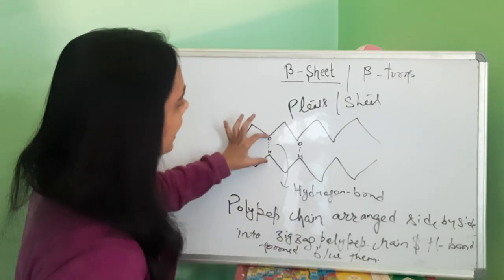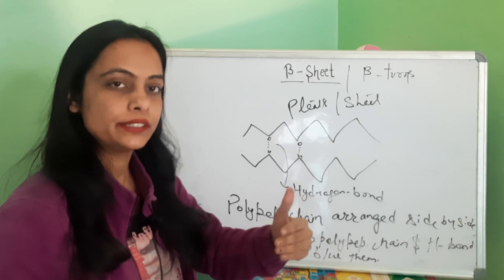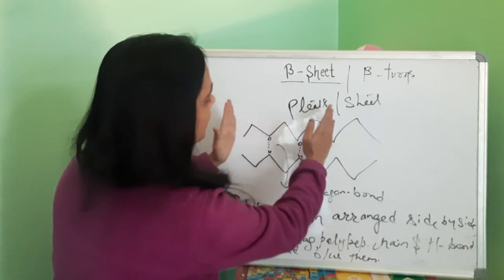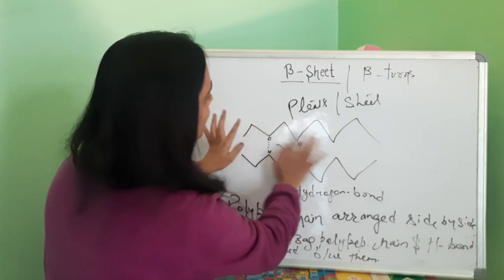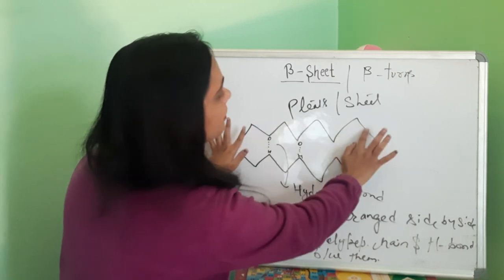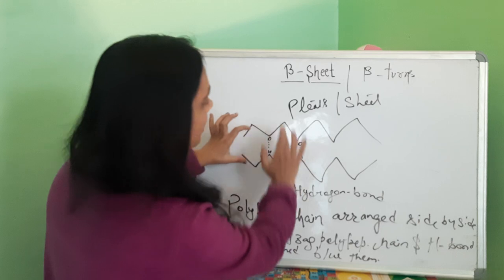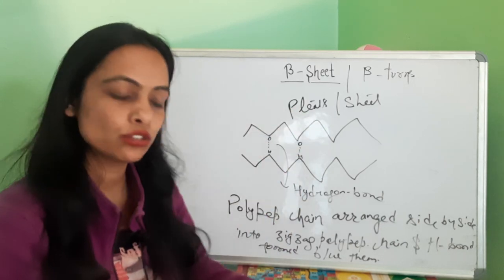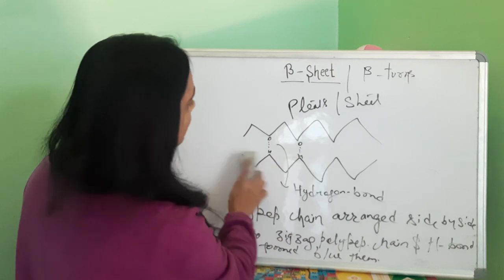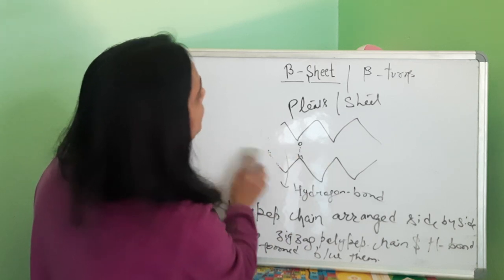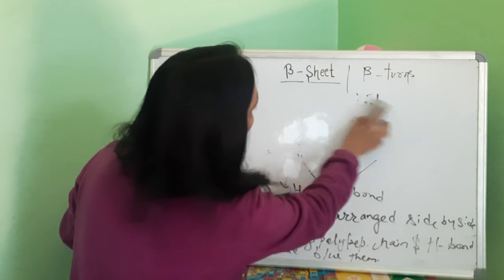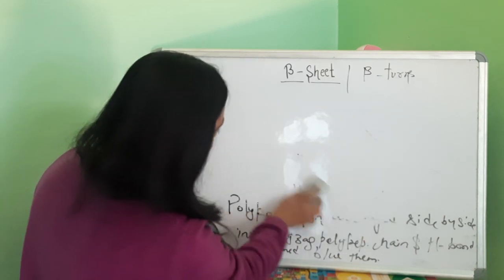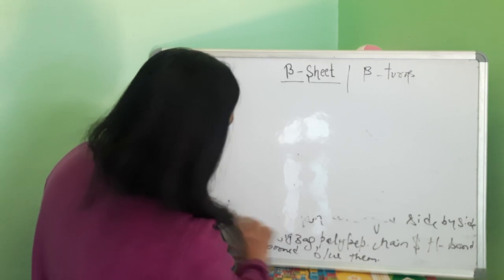The adjacent segments are arranged side-by-side, and hydrogen bonds form between them. When two segments are arranged side-by-side, the hydrogen bonds formed between them create the beta-sheet-like structure. This is the definition we need to understand — what are beta-sheet or beta-plated structures.